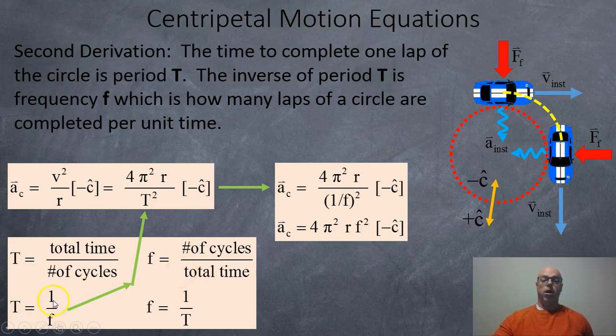So to find period, it's just 1 over the frequency, or frequency is just 1 over the period. So we're going to take this period equals 1 over f, and we're going to sub it in for the T right here. So right here we're going to get 1 over f squared. And so that's going to bring the f to the top, and we're going to get 4π²rf². And that's the other formula for centripetal motion.